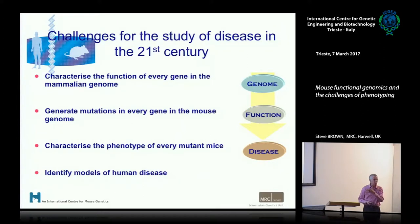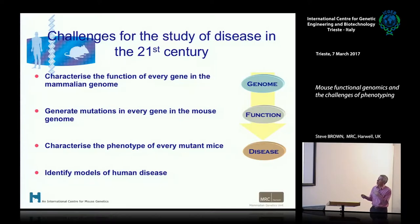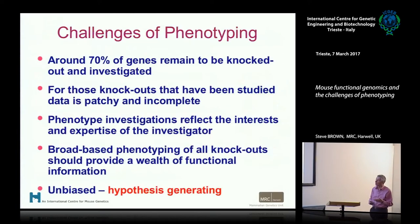These are the big challenges for mouse genetics in the 21st century. They haven't changed over the last 10 years — there are still enormous challenges of characterising the function of every gene in the mammalian genome, generating mutations in every gene, characterising the phenotype of every mutant mouse, and through that identifying new models of human disease, which will give us insight into biological mechanisms and disease models for therapies.